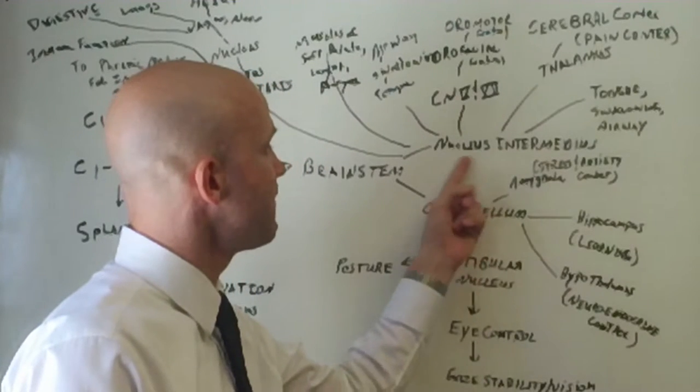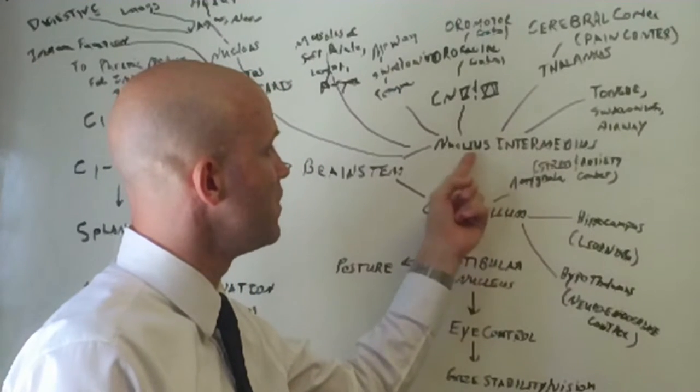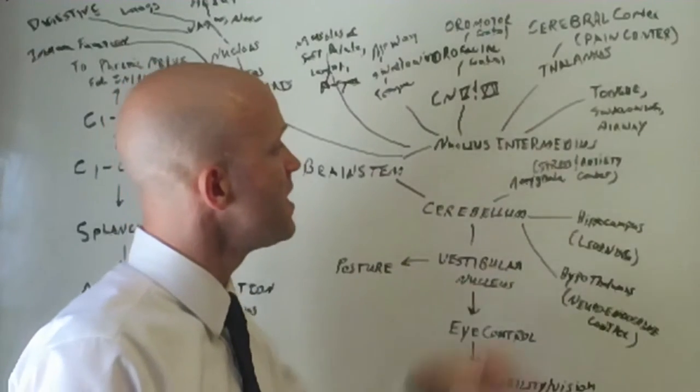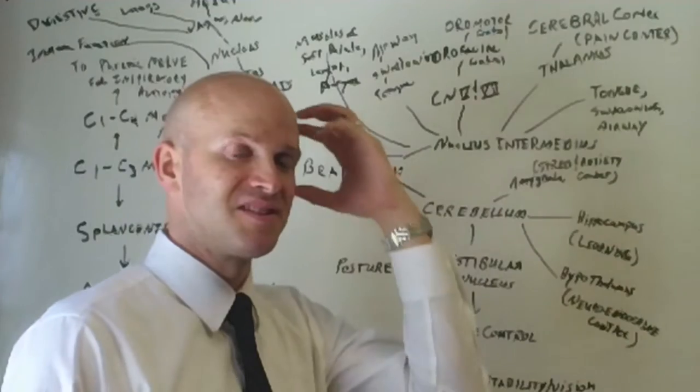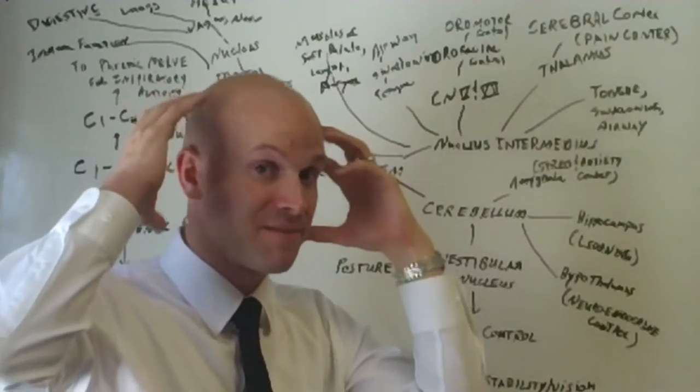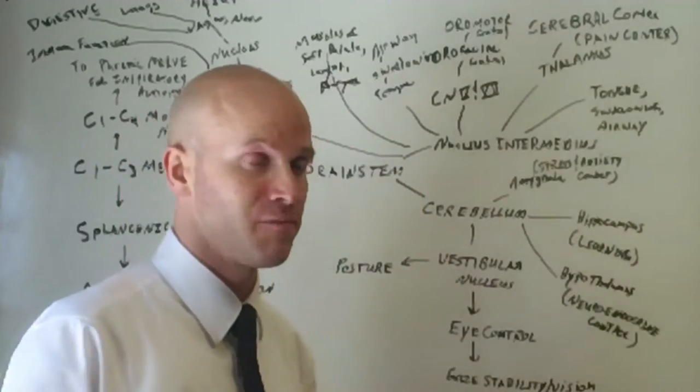And then over here, this is a fancy word for part of the brainstem, the nucleus intermedius. And that controls your tongue swallowing and airway. The thalamus, which then goes to the cerebral cortex, which is your ability really to feel pain and to perceive pain.